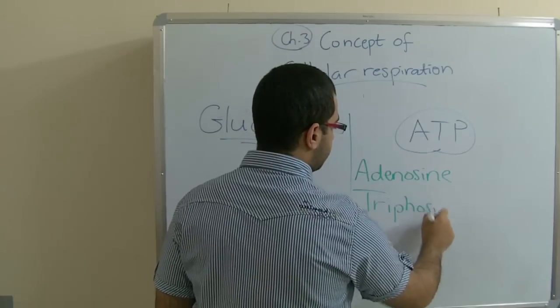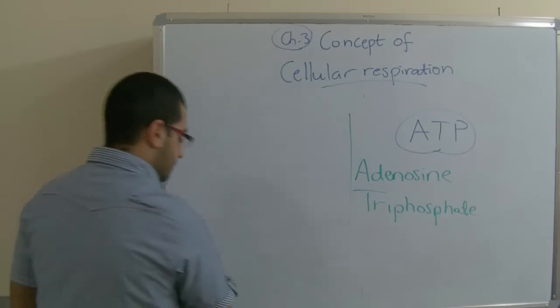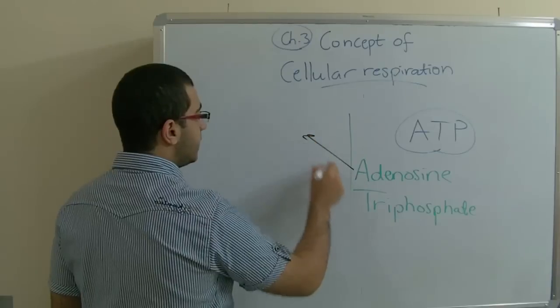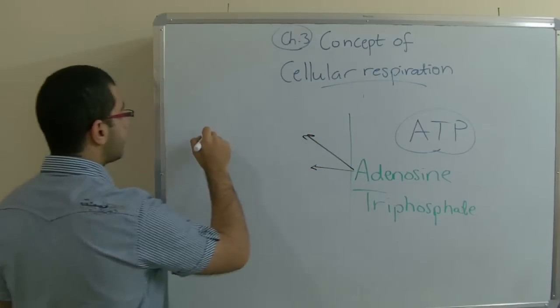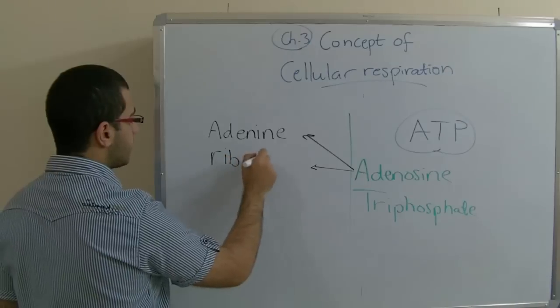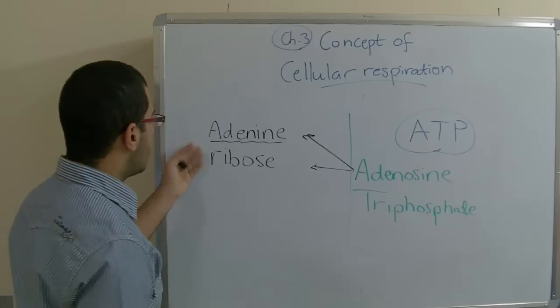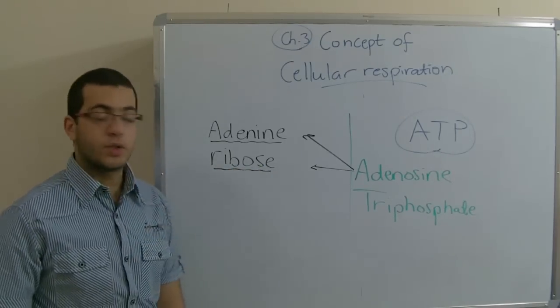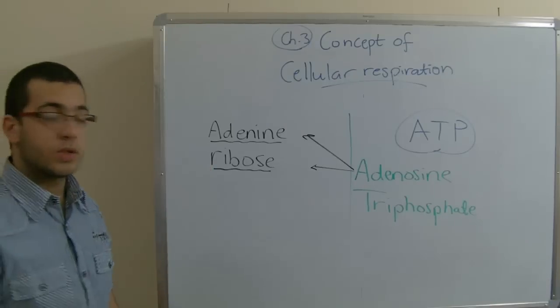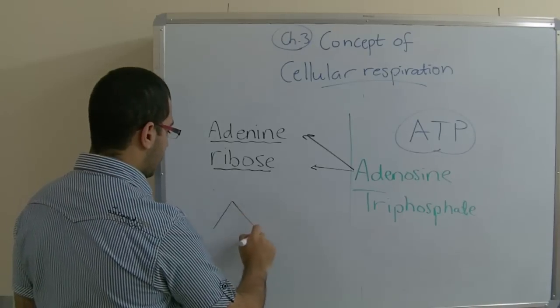ATP stands for adenosine triphosphate. So first adenosine is adenine and ribose. Adenine is a nitrogen base and ribose is a kind of sugar. It's called a five or carbon pentose sugar. It's called pentose because it has five vertices like this.